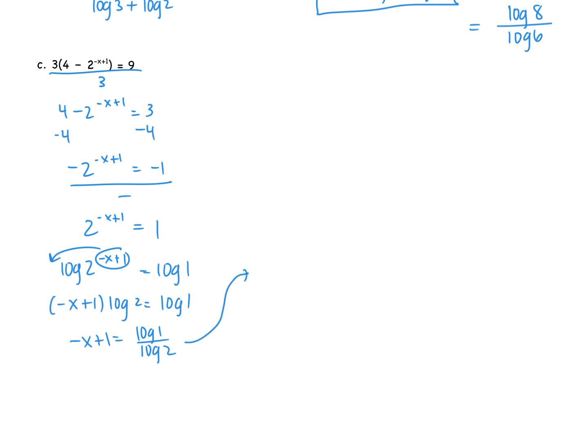When we do that, we get negative X plus 1 is equal to log of 1 over log of 2. Then I'm going to subtract that 1. So I get negative X is equal to log of 1 over log of 2 minus 1. Lastly, if we divide by the negative, that means this first quantity that is currently positive has to become negative. So that's going to become negative log of 1 over log of 2. That negative 1 at the end then becomes a positive 1. So there is our answer.